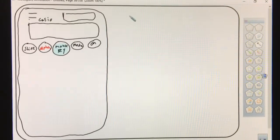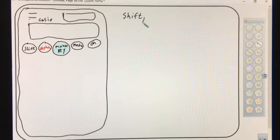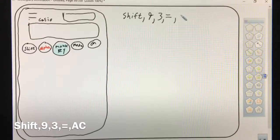As soon as you walk into the testing center, the first thing you want to do when you have the calculator is hit shift, then the nine button, then the three button, then equals, then AC.